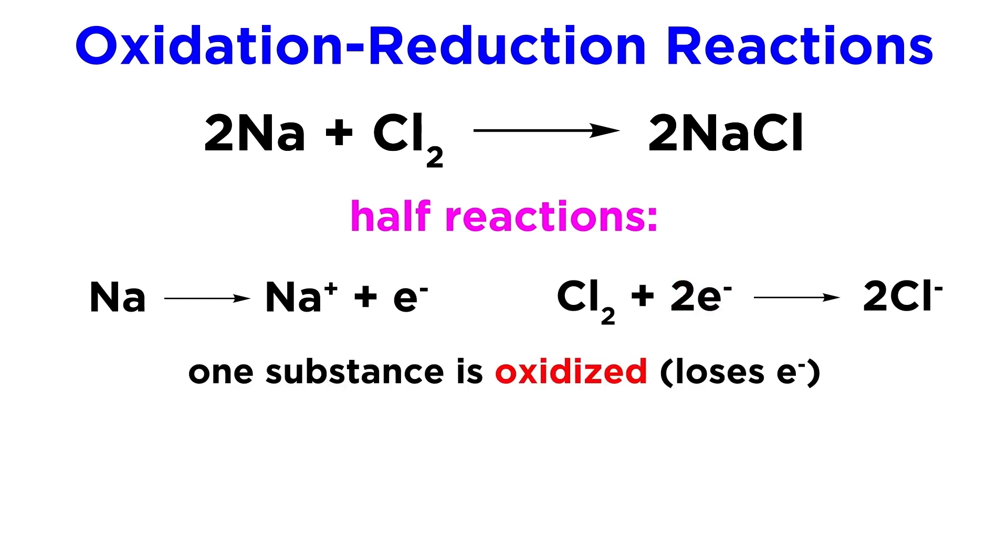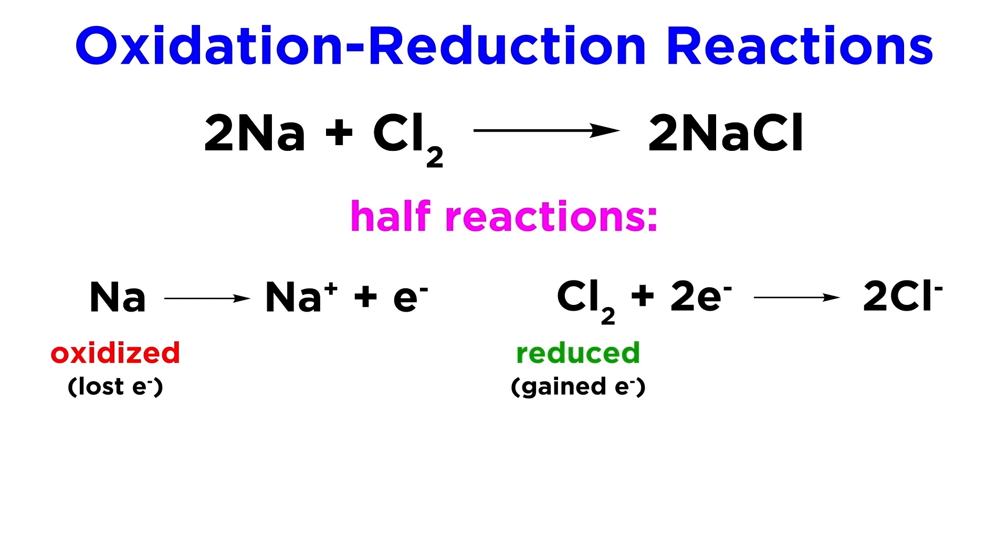In a redox reaction, one substance will be oxidized, which means that it loses electrons, and one substance will be reduced, which means that it gains electrons. In this example, sodium has been oxidized, and chlorine has been reduced.